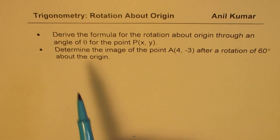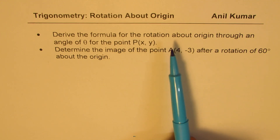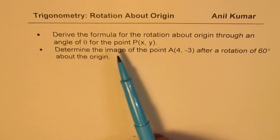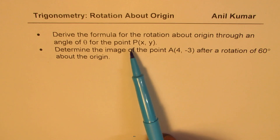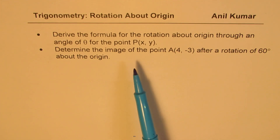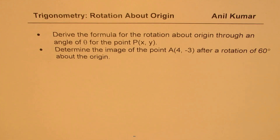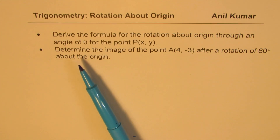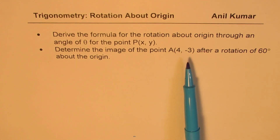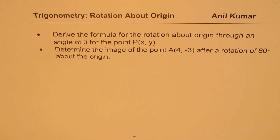First we'll derive a formula for the rotation about origin through an angle of theta for a given point P(x, y). Then we'll actually find the coordinates using our derived formula. For that we have a question: determine the image of the point A(4, -3) after a rotation of 60 degrees about the origin.